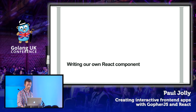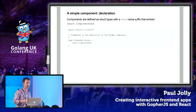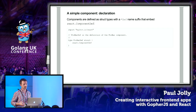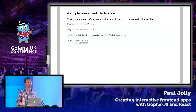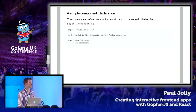Using the initialized app as a starting point, let's create ourselves a simple component. Components are defined as struct types that have a 'def' name suffix, and that struct type just has to have a single embedded field of the type react component def. That's just a way of signaling to the code generator that this is a component — the combination of that name suffix and the embedded field. So there we go, we've declared ourselves a component, and the code generator will see that.